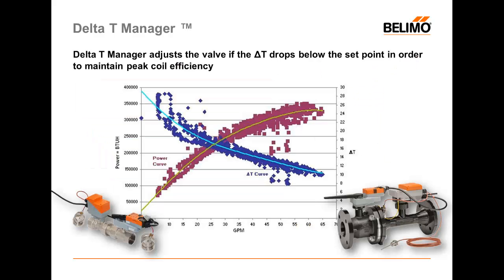The Delta-T manager adjusts the valve if the Delta-T drops below the setpoint in order to maintain peak coil efficiency. As an example, suppose that we determine the optimum Delta-T is 12 degrees Fahrenheit, and we have programmed the energy valve and the Delta-T manager to not let that Delta-T drop below 12°F. If the valve does drop below 12°F, we will see the following response.